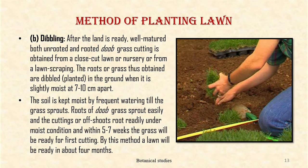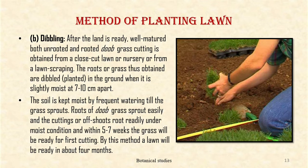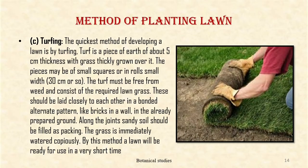Dibbling: After the land is ready and well manured, both unrooted and rooted Doob grass cuttings are obtained from a closely cut lawn or nursery or from lawn scrapings. The roots or grass thus obtained are dibbled, i.e. planted in the ground when it is slightly moist, at 7 to 10 cm apart. The soil is kept moist by frequent watering till the grass sprouts. The roots of Doob grass sprout easily and the cuttings root readily under moist conditions. Within 5 to 7 weeks the grass will be ready for first cutting. By this method, a lawn will be ready in about 4 months.